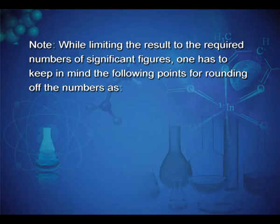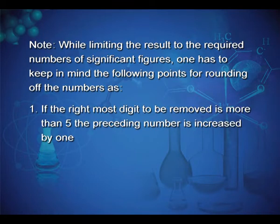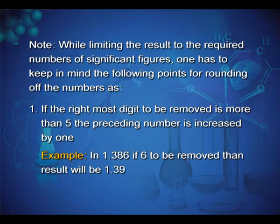One point to be noted here: while limiting the result to the required number of significant figures, one has to keep in mind rounding of numbers. First point: if the rightmost digit to be removed is more than 5, the preceding number is increased by 1. Example: in 1.386, if 6 is to be removed, then the result will be 1.39.